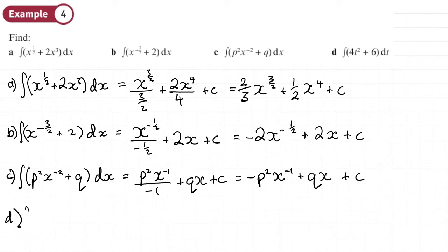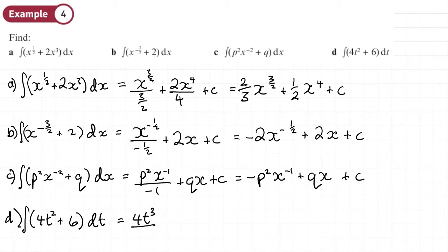Part D: we're integrating 4t squared plus 6, DT. This is slightly different in that we integrate with respect to T — so we treat T like the X; T is the thing where the power should change. Add one to the power, divide by the new power, and then the constant 6 becomes 6T because we're integrating with respect to T. Tidying up: 4 thirds T cubed plus 6T plus C.